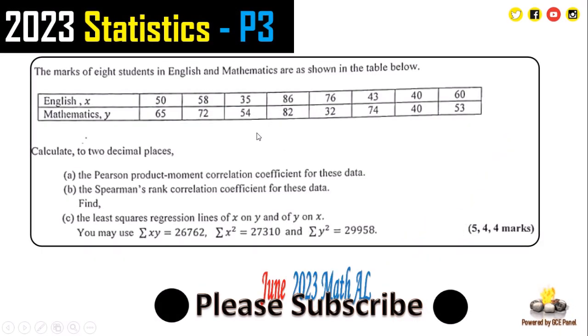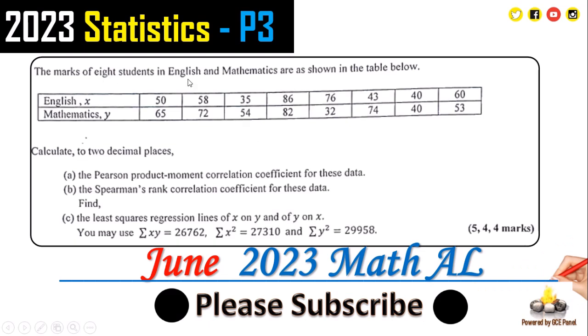The question reads: Question 8. The marks of eight students in English and Mathematics are shown in the table below, English x and Maths y. Calculate to two decimal places: (a) the Pearson product-moment correlation coefficient for this data, (b) the Spearman's rank correlation coefficient, and (c) the least squares regression lines of x on y and y on x. You may use summation xy equals that, summation x squared equals that, summation y squared equals that.